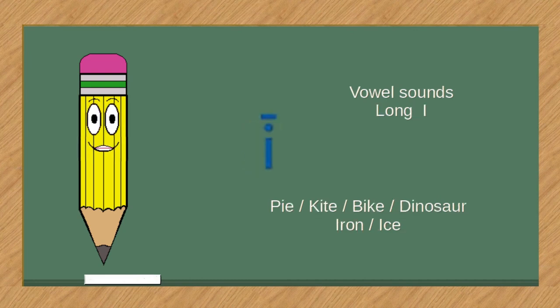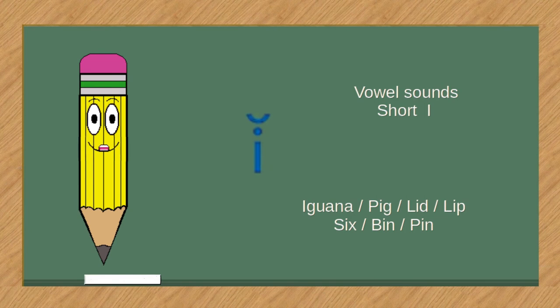Vowel sounds, long I. Pie, kite, bike, dinosaur, iron, ice.